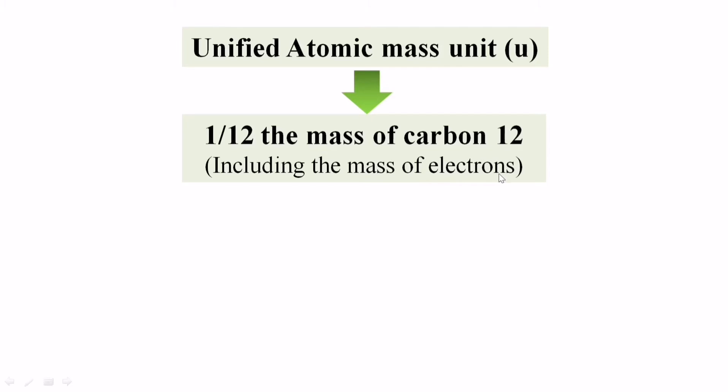So from that logic, mass of carbon-12 will be how much? 12 u. Technically, if you measure this in terms of kilograms, which is SI unit, 1 u equals 1.66 × 10^-27 kg. See, the reason for taking this is because carbon-12 has 6 protons and 6 neutrons, and mass of electron, even though it is being considered, is actually very very small compared to these protons and neutrons.